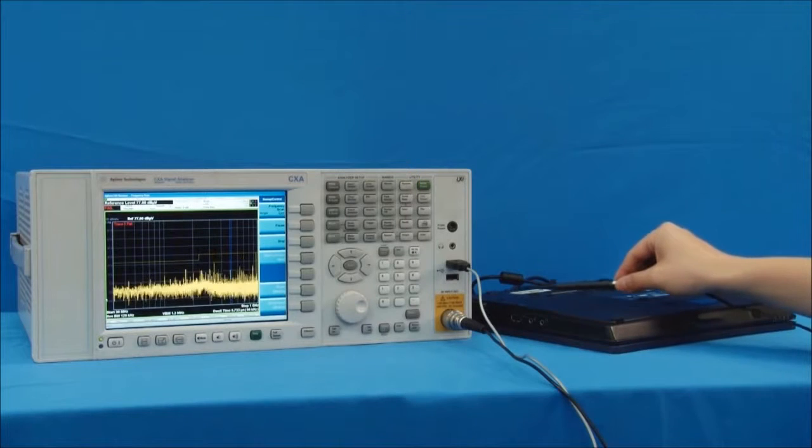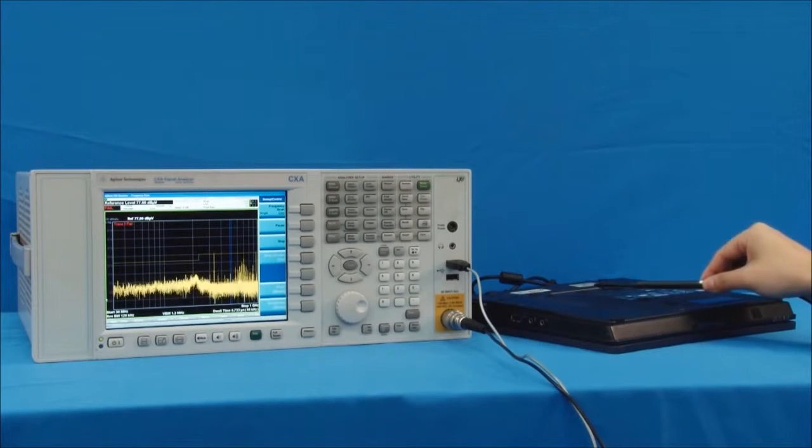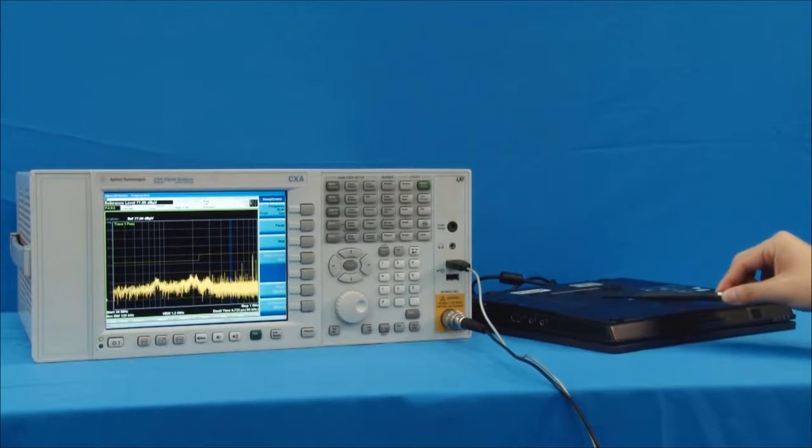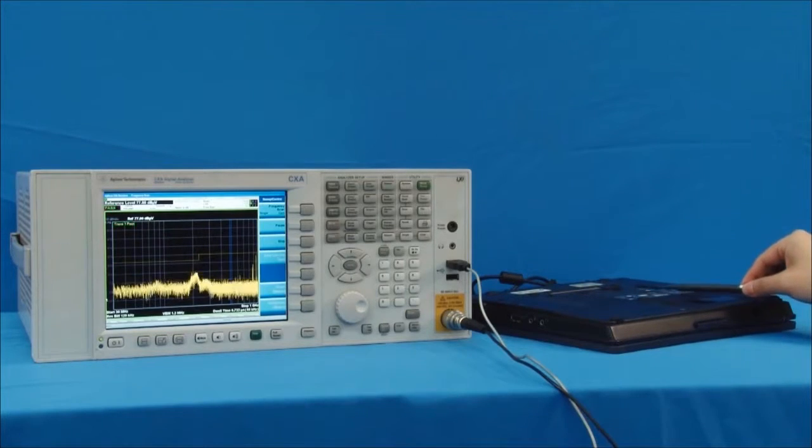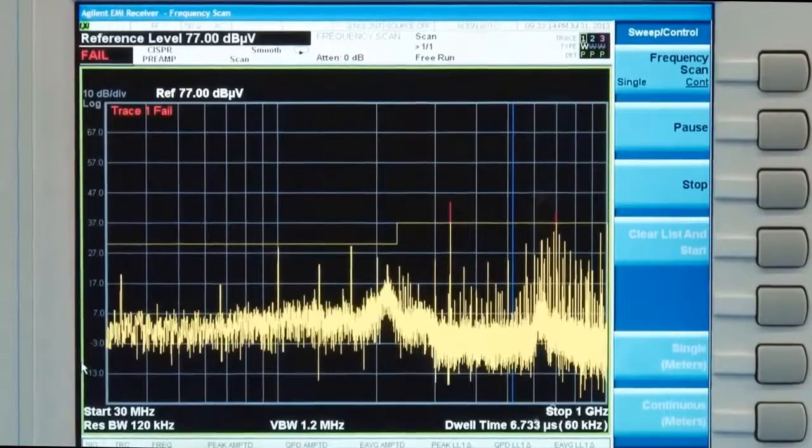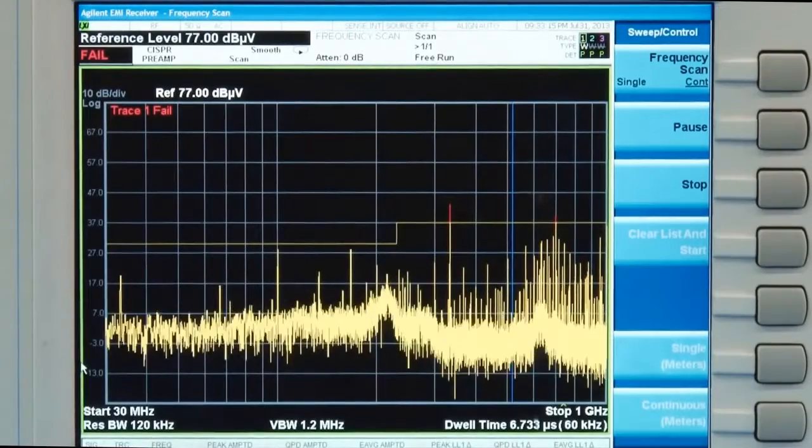We move the probe over the back of the notebook at a distance around 2 centimeters. On the display of the spectrum analyzer, we see the signals which are radiating from the DUT. The signals may vary when we move the probe. We notice there is an obvious signal with high amplitude.